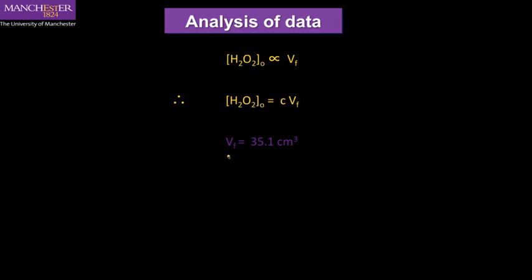Now, we know V final because it was the last value in the table that I gave you at infinite time. So that was 35.1 centimeters cubed. Consequently, we know this. If we know the starting concentration of hydrogen peroxide, well, we know that because we know what the concentration was at the beginning. So I'll give you that now. The concentration at the beginning of the experiment was 0.892 moles per liter of hydrogen peroxide. That's after the dilution with potassium iodide. So if you use this value here and this value here, you should be able to determine the constant of proportionality.